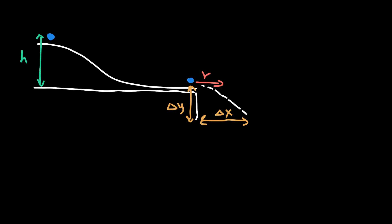By looking at graphs of velocity and height, we found that the velocity of the ball at the end of the track is proportional to the square root of the height at the top of the track. Or similarly, velocity squared is proportional to height. We probably assumed the higher we let the ball go, the faster it would be at the end, but we probably did not suspect it would be the square root of height that determines the speed.